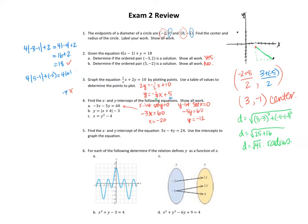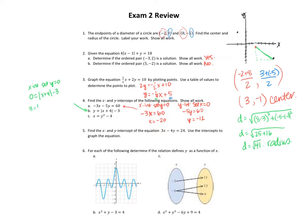And then if I want to set y equal to 0, I get 0 equals absolute value of x plus 4 minus 3. So I can add 3 over: 3 equals absolute value of x plus 4, and this breaks into two equations: x plus 4 equals negative 3, and x plus 4 equals 3. This gives me x equals negative 1, and this one gives me x equals negative 7. So I have two x-intercepts there. And then for the y-intercept, I want to set x equal to 0, so I get y equals absolute value of 4 minus 3, which is 1.